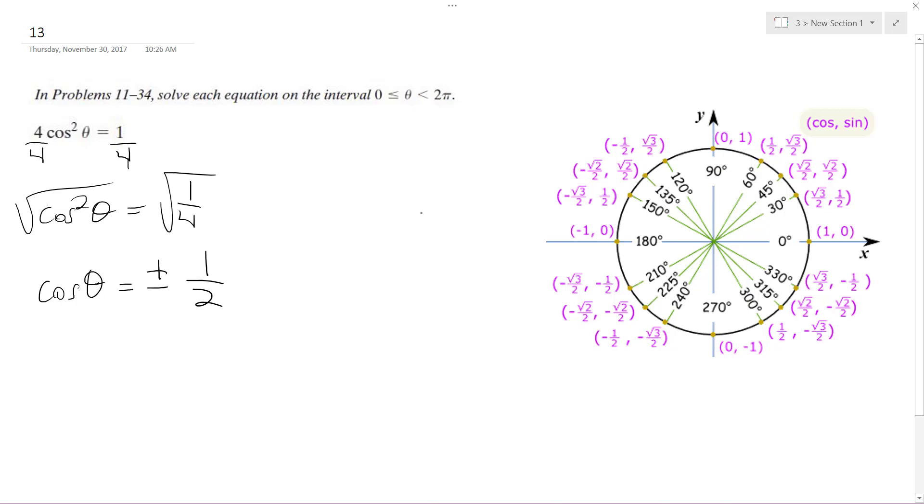So cosine is plus or minus 1 over 2. An example here would be 1, root 3, 2. So this is a 60 degree triangle or pi over 3 radians. Adjacent over hypotenuse. So it's going to take place in 4 different parts of the unit circle.